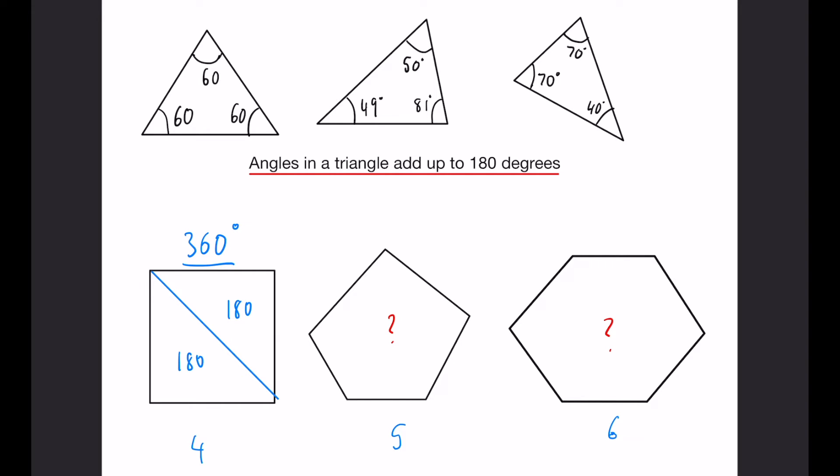Likewise, with five and six, we can do exactly the same thing. So pick a point and draw the triangles that you can. And again, we've got three triangles this time, so we have 180, three lots of 180, 540.